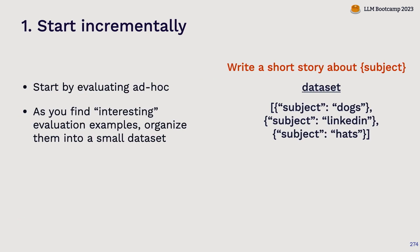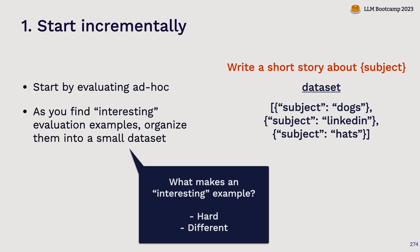Once I have that small dataset of interesting examples, rather than just trying things ad hoc, when I make a change to the prompt I'll run that new prompt on all the interesting examples I've flagged in the past. What makes examples interesting? Two things: examples that are difficult for the model — if you're playing around and find a place where it fails, that's worth saving, because you want to make sure any future change performs well on those hard cases. And examples that are really different — like if you've been writing stories about dogs and cats, and then get the idea that users might want stories about LinkedIn, that's really different and worth recording.